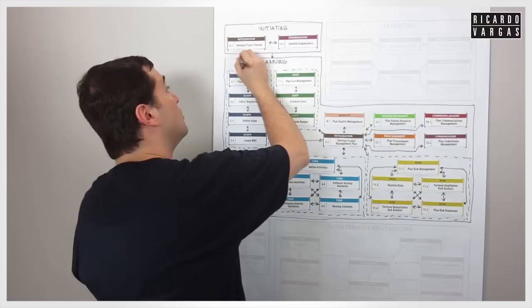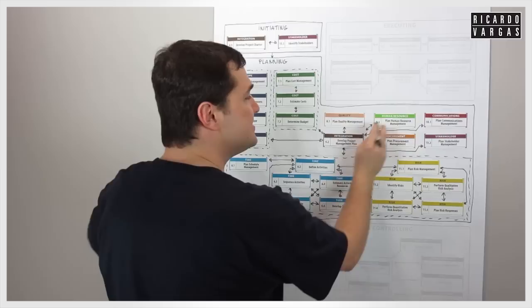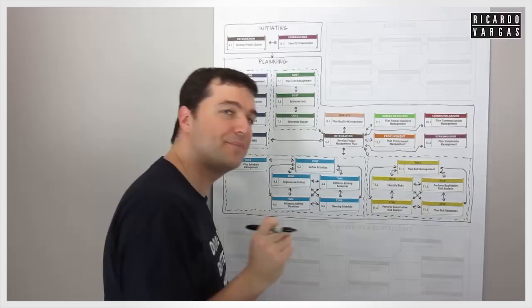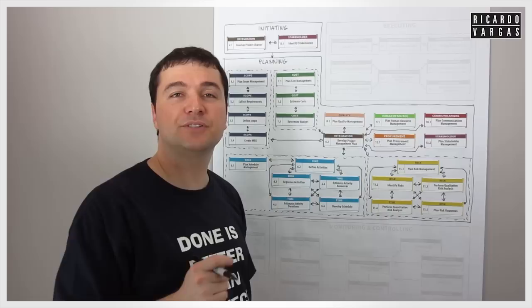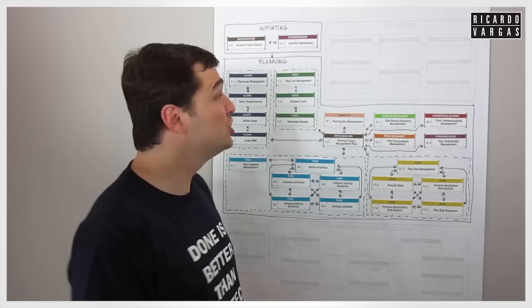So this is how we plan our project — we initiate and we plan. Counting all the planning processes: there are 24 out of 47 total processes in planning — almost 50%. This is a clear indication that planning is critically important in the process.